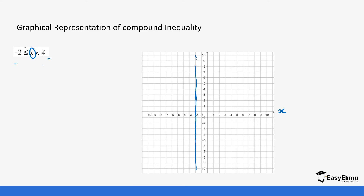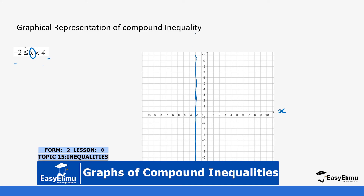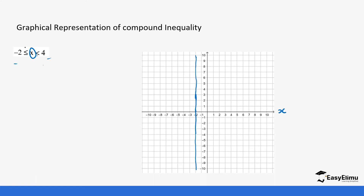The bold line is placed at negative two on the x-axis. Then for x is less than four — since there is no equal sign, four is not part of the values of x. So we are going to use a dotted line instead. You draw a dotted line at four.